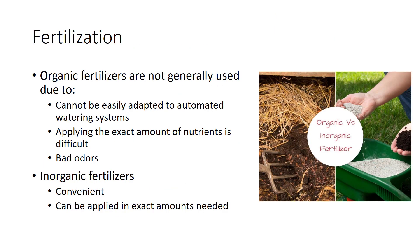Plants grown in a greenhouse are generally grown in restrictive pots with less growing media than when plants are grown in the field. Plants grown in the greenhouse typically use soilless growing medium, which requires fertilization, especially with micronutrients. The two types of fertilizers that can be used are organic and inorganic. Organic fertilizers are typically used by specialty growers and are not used in greenhouses for a variety of reasons. For example, organic fertilizers cannot be easily adapted to automated watering systems, and applying the exact amounts of nutrient elements is difficult. Organic fertilizers also produce volatiles that have bad odors, making their use in enclosed conditions unpleasant, and these volatiles can also have adverse effects on plant growth.